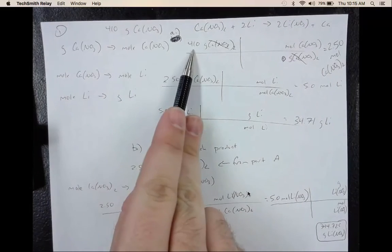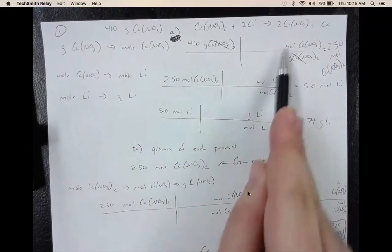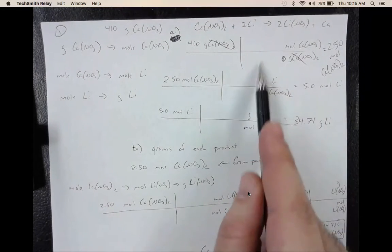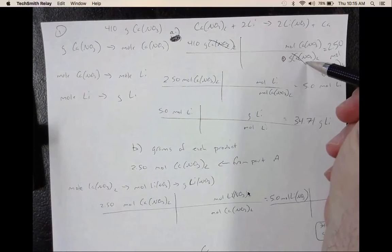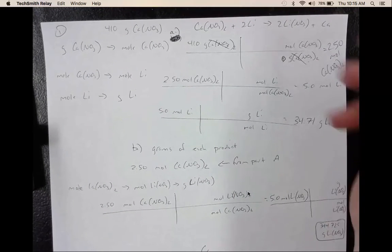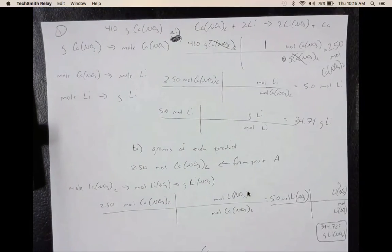I take the 410 grams of calcium nitrate and I set up the T. Our grams are on the bottom, our moles are on top. You have to plug in the values. What you need to remember is that we find the mass on the periodic table. Whenever you find the mass on the periodic table, it's always the mass of one mole of something.